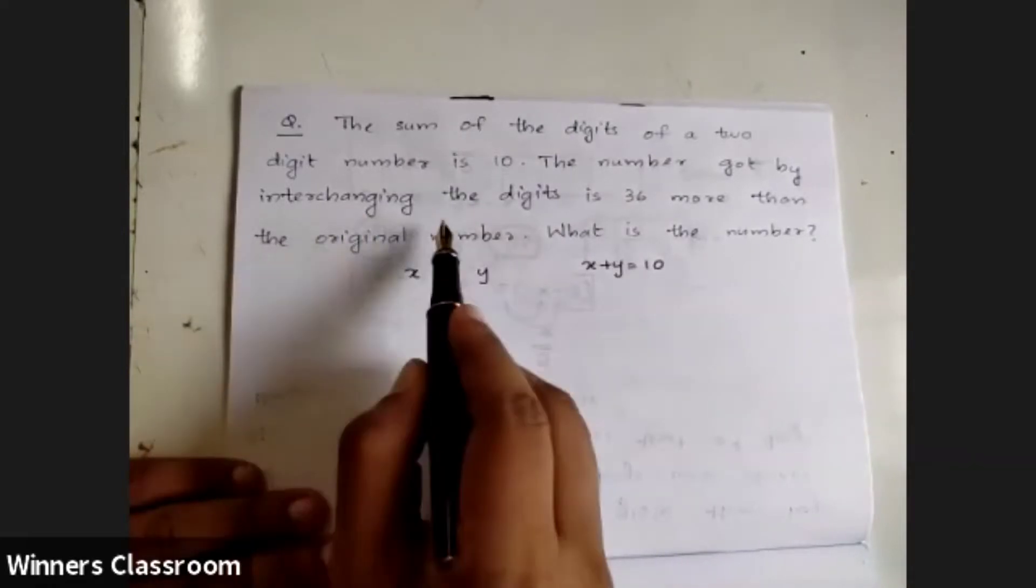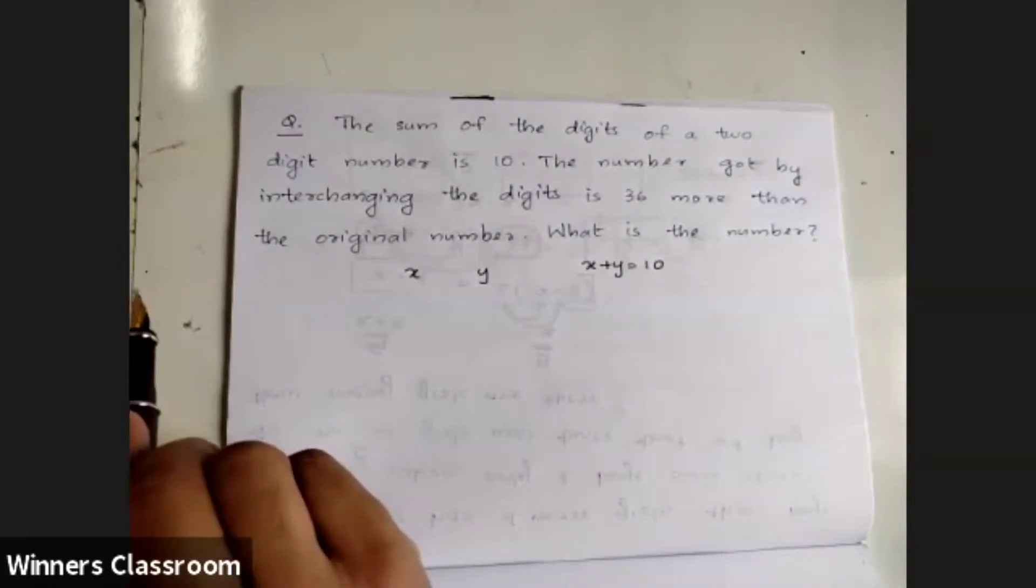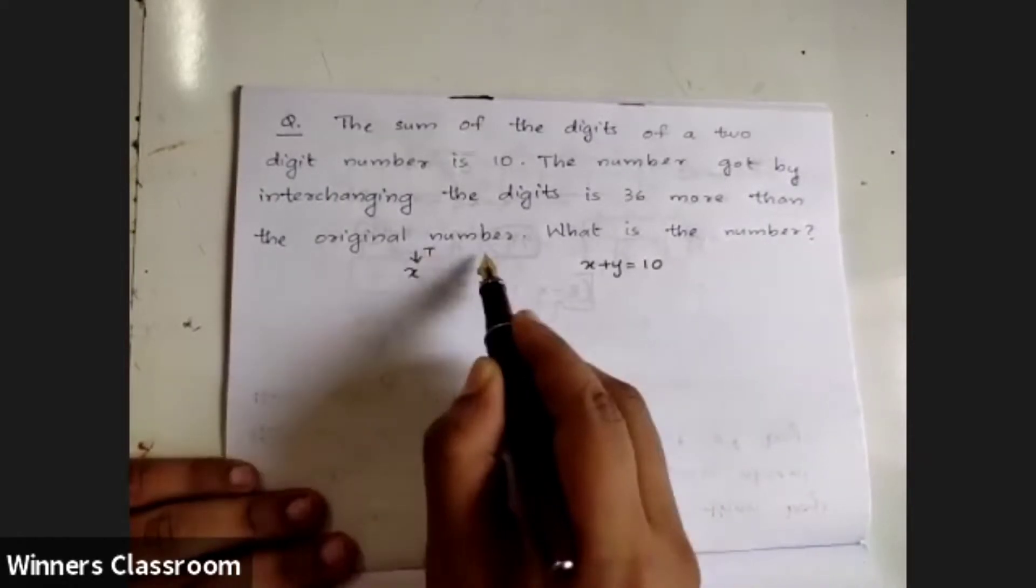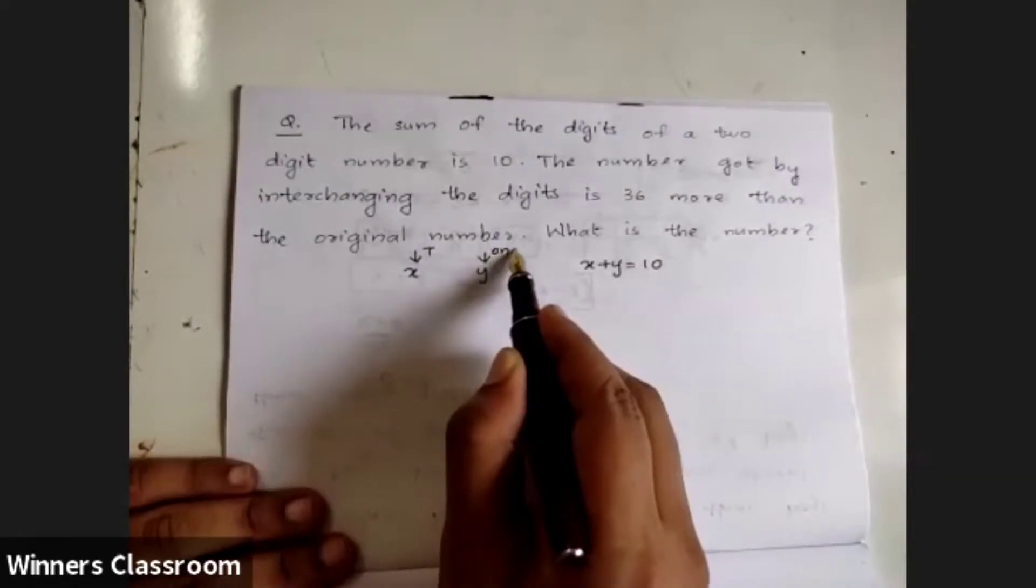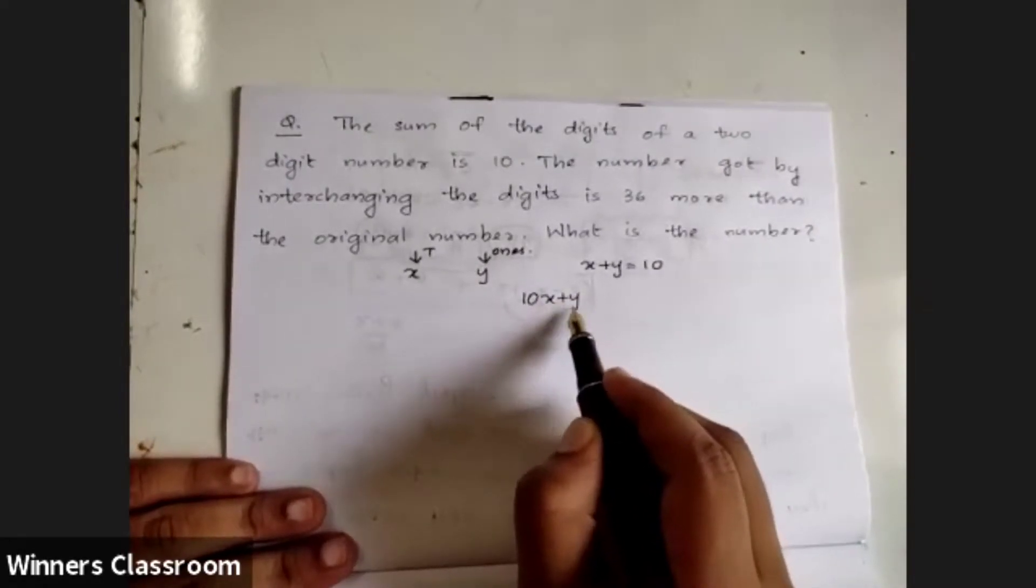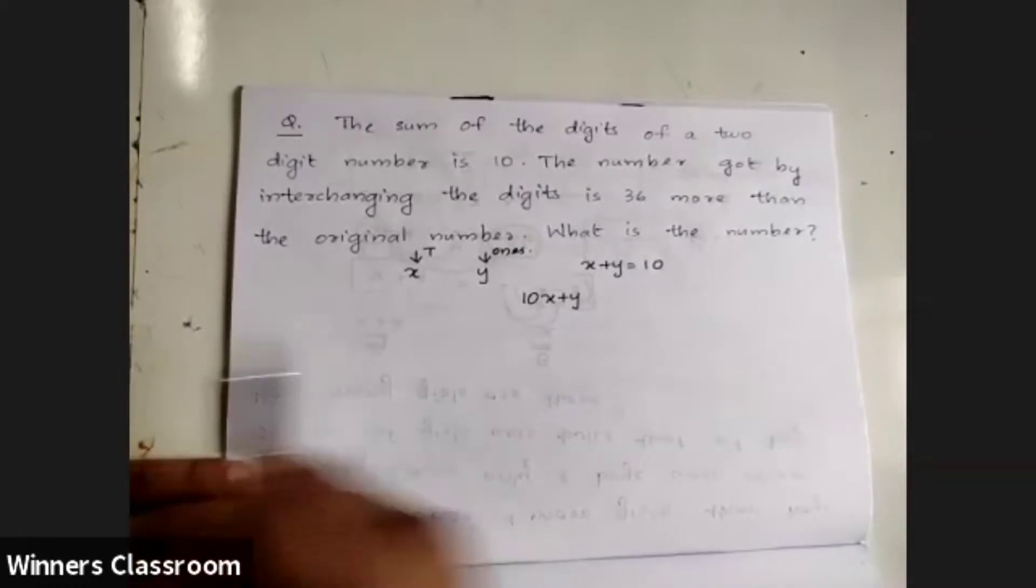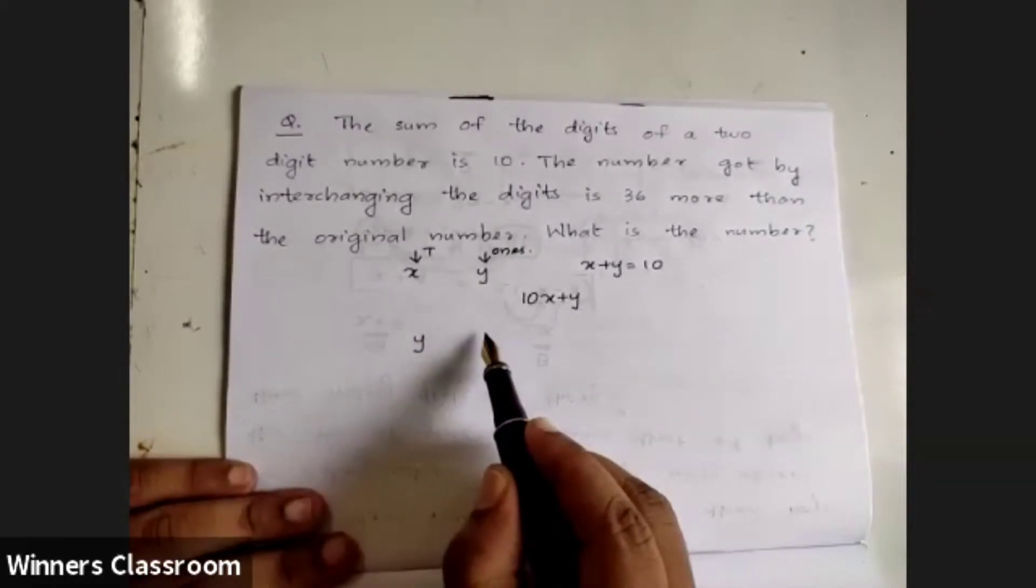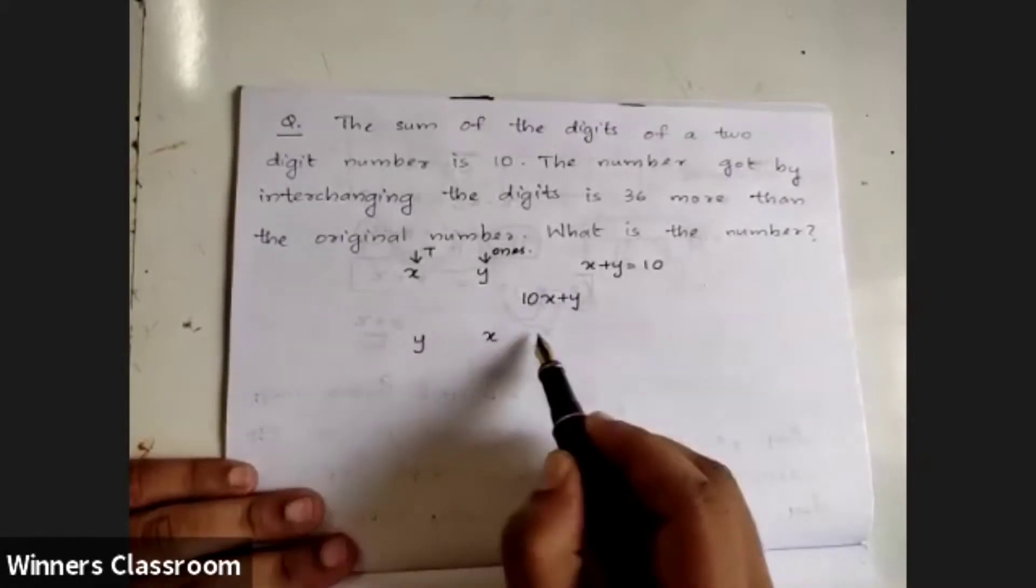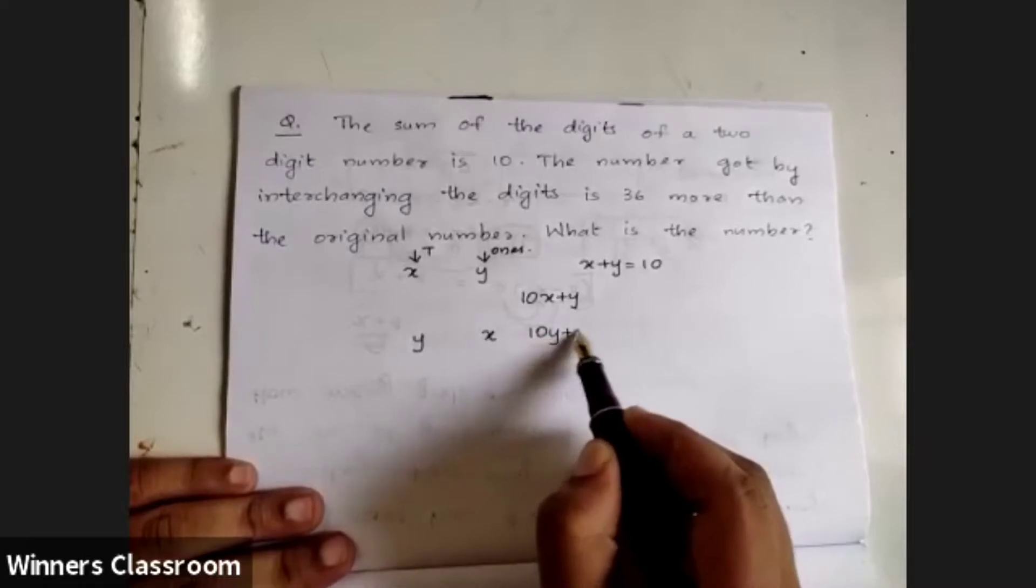The number got by interchanging the digits. When I write this, the tens place is 10x and the ones place is y, so we have 10x plus y. For the interchanged number, we have 10y plus x.